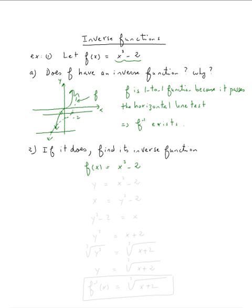So we usually replace f of x by y. So this is y equal x cubed minus two. And then we swap x and y. So x is equal y cubed minus two. And then we solve for y.